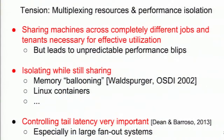There's a tension between multiplexing resources — running lots of stuff on each physical machine for good utilization — and performance isolation. Work on isolating resources while still sharing them includes memory ballooning by Waldspurger at OSDI 2002 and Linux containers added to the kernel. Also, in wide fan-out systems with thousands of cooperating tasks, controlling tail latency is hard — at any given point one machine is doing something else, causing latency blips for your interactive requests.